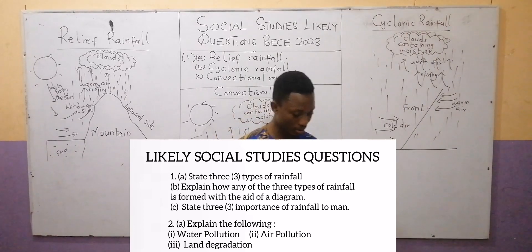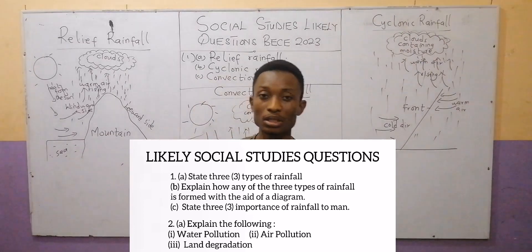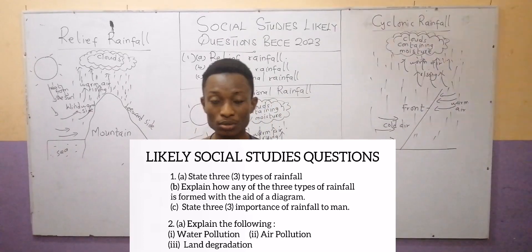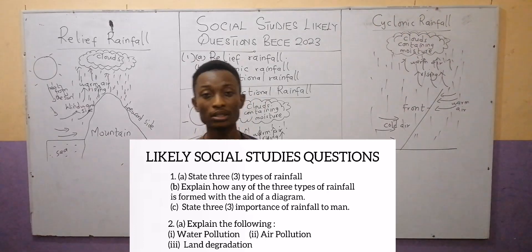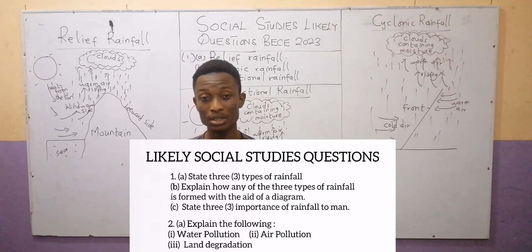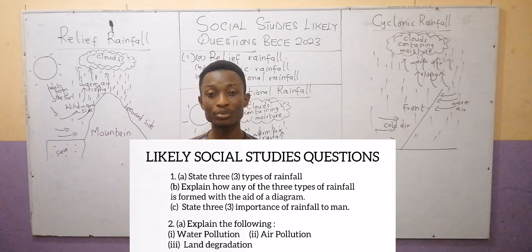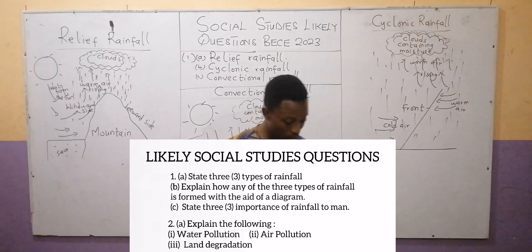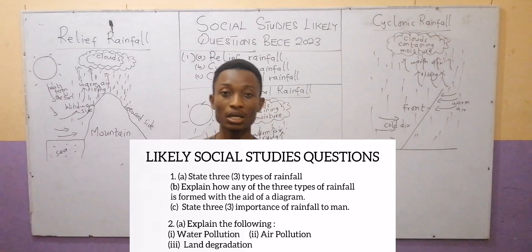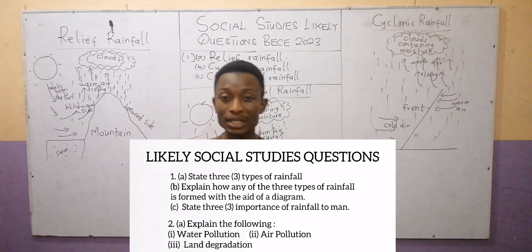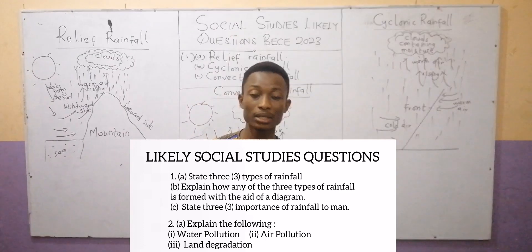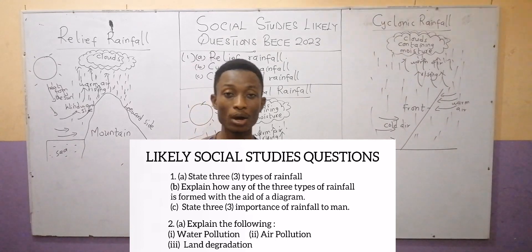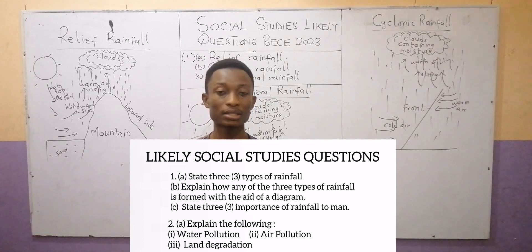Air pollution is the process whereby the quality of the air is reduced or deteriorated due to the release of harmful gases such as sulfur dioxide, ammonia gas, nitrogen oxide, and the like, which sometimes makes breathing very difficult. Land degradation is the gradual destruction of the quality and quantity of the environment as a result of human activities such as illegal mining, excessive farming, stone quarrying, and the like, which renders the land useless and unproductive.